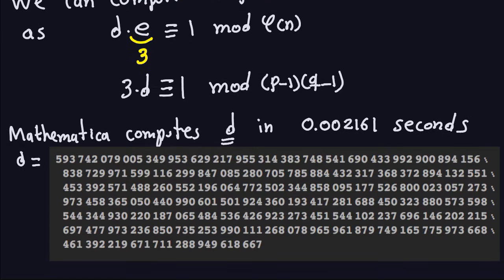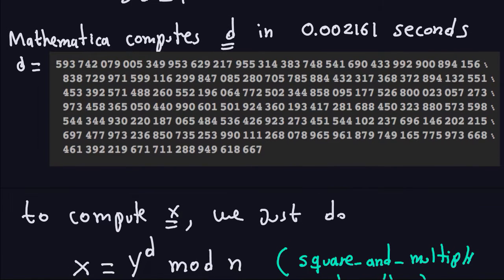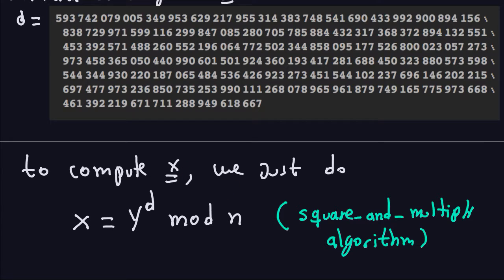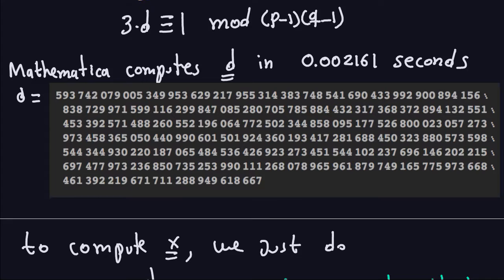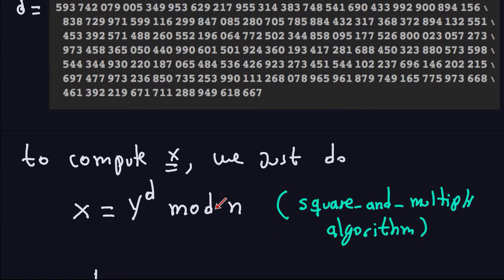Now how do I solve my problem? To compute x, we only just have to do this: we take y, which is in the image, we take it to the d power, which is this d which was just computed because we knew p and q. We were able to solve this modular equation very easily. Then this is modulo n. Now this is not a hard problem because this is just basically the square and multiply algorithm. Even though the numbers y and d are large, this will not take too much time.